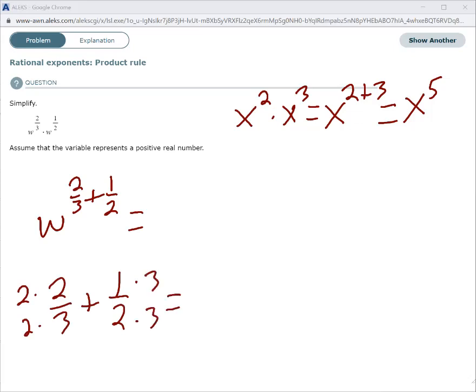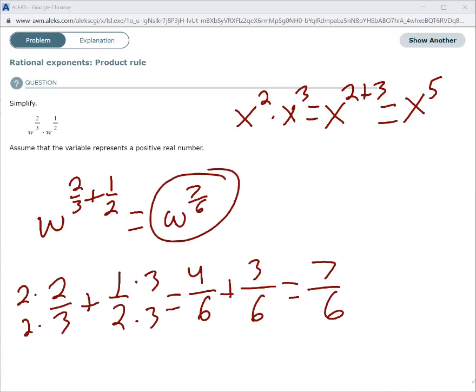So two times two on the top here becomes four. Two times three in the bottom here becomes six. One times three becomes three and two times three becomes six. So my bottom is the same so I can add the top and it becomes seven over six. This is going to be w to the seven over six power for the final answer.